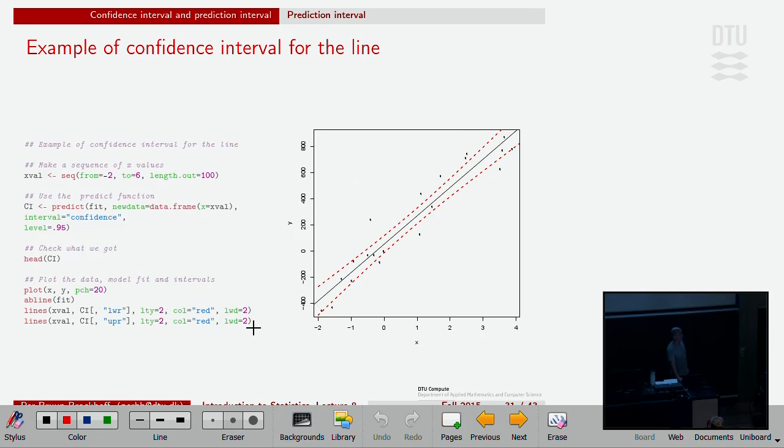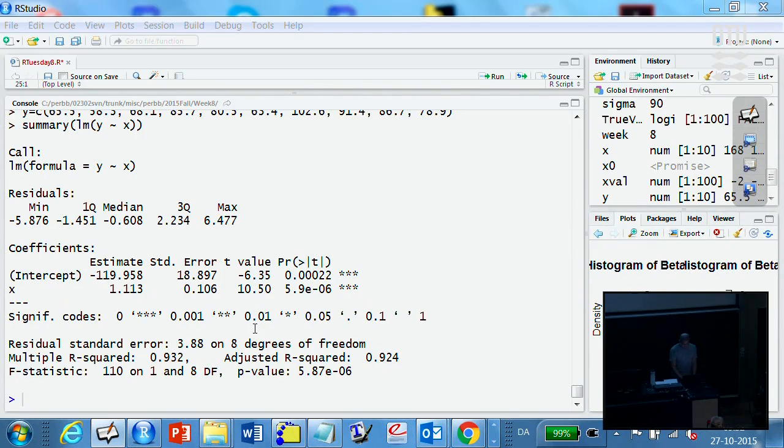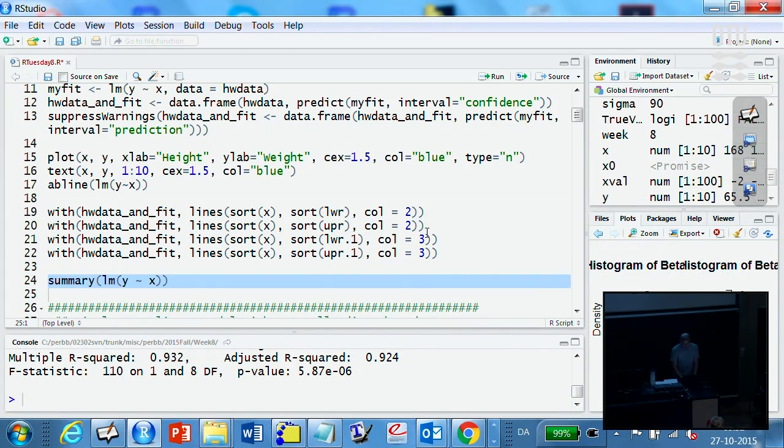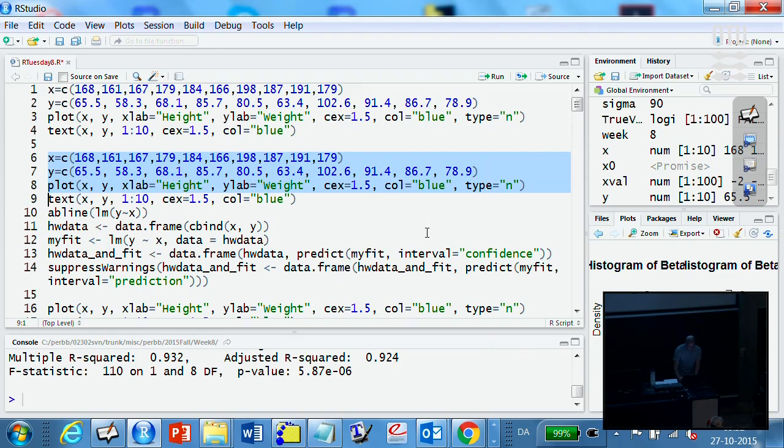That was confidence intervals and prediction intervals. Just to let you know that there are functions in R that can do it for you. Here it looks pretty nasty, I know, but basically I'm just having my height and weight. I'm plotting. I'm putting in the line with the abline here. There are different ways to put in the line. This is one way.